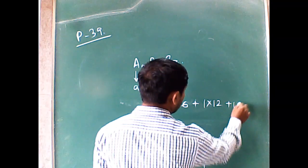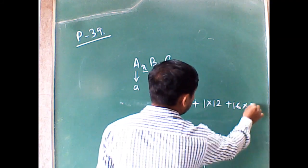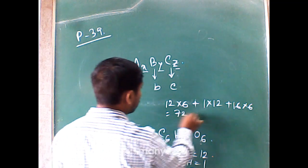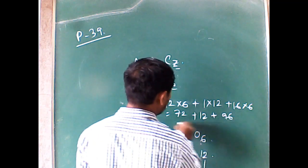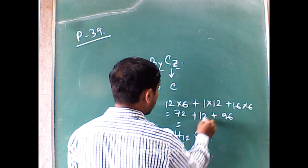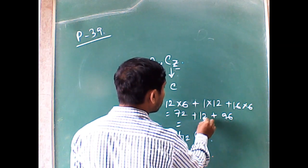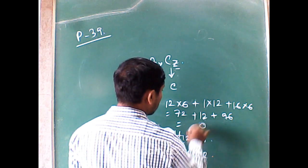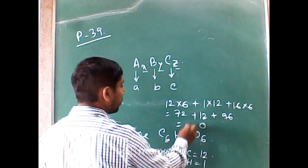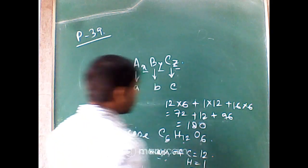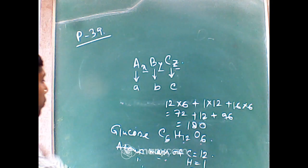So, A·x = 12 × 6, B·y = 1 × 12, and C·z = 16 × 6. That gives us 72 + 12 + 96, which equals 180. So 180 is the molecular mass of glucose.